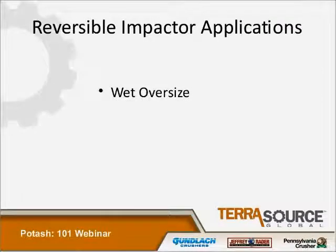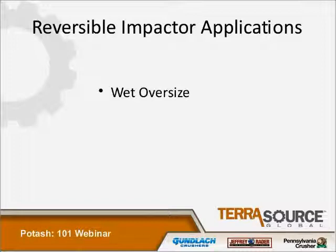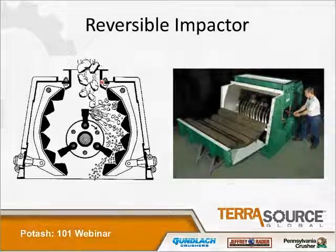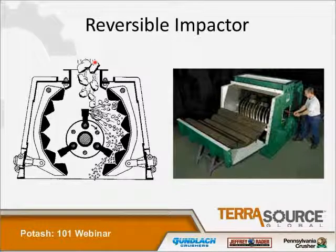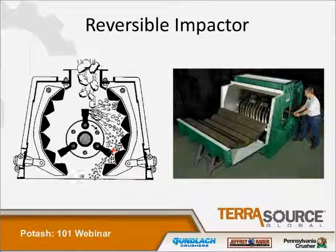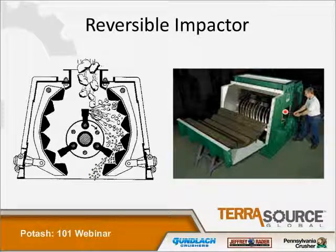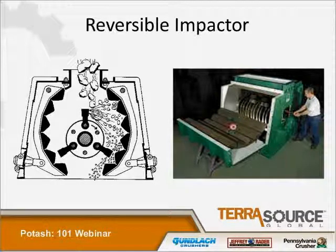Reversing impactor applications include wet oversize, and it works quite nicely for that. The impactors are a little more forgiving than the cage factor when it comes to passing some tramp metal — the hammer will swing back, allowing it to pass. With any piece of equipment, we like to have protection. With the reversing impactor, material enters the top, is thrown against the impact plates, and sized out the bottom. It's very easy to replace the hammers through the access door, remove the suspension bar, and use the hinged side for removing the impact plates.